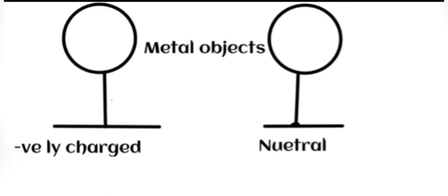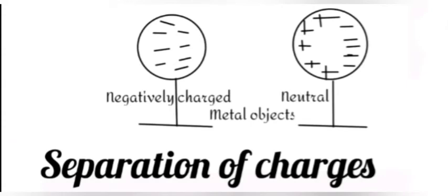If we bring the two objects close to each other, we will see a separation of charges happen in the neutral object as negative electrons are repelled to the right-hand side. At this time they are not touching and no charge has been transferred.